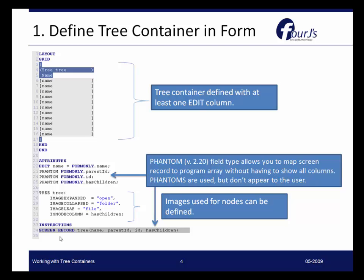The other part you see is some attributes related to the tree. The tree has attributes such as image expanded and image collapsed, so you can customize the image shown to the user when a node is expanded or collapsed. For individual leaf nodes you can also determine what image you want. The is_node_column equals has_children attribute indicates that we are going to work with that value to dynamically load the array and identify for a particular node in the tree if it indeed has children, which will help with the loading and displaying of the data.